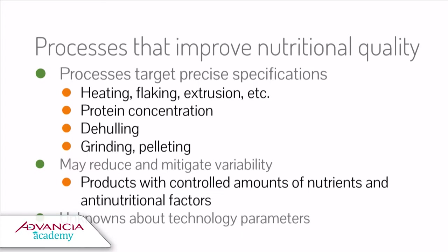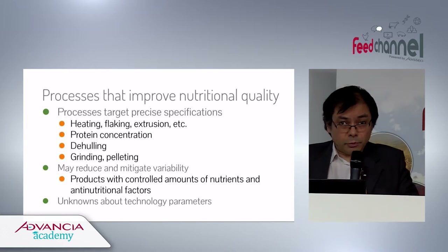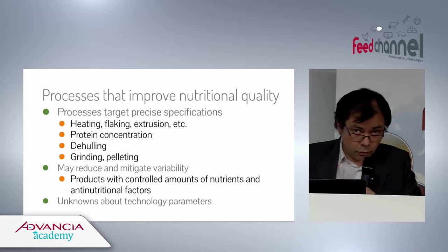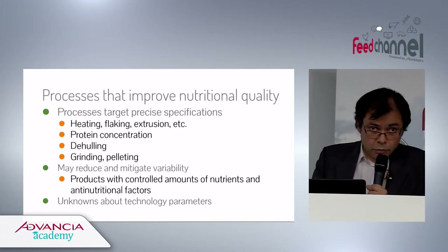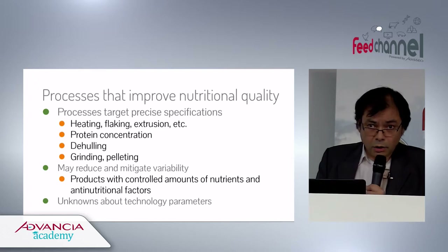These processes include heating, flaking, hulling, and grinding. You get products with lesser variability and a defined amount of nutrients and nutritional factors. However, there are still many unknowns, and processes may vary over time — so next year you may end up with a different product and different specifications. Variation may be lower, but it still exists.